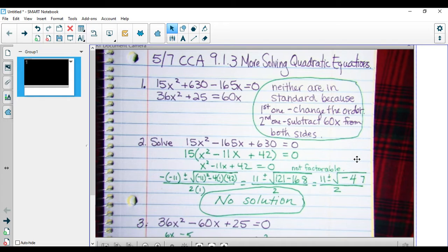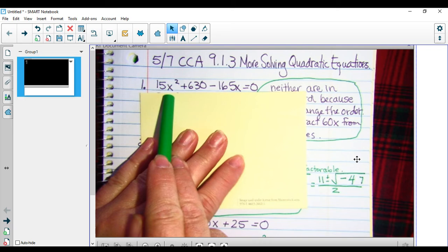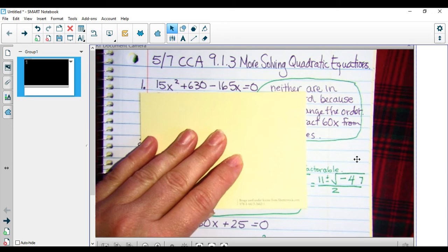Number one, you were given two equations. You had to say why they were or were not in standard form. The first one is not in standard form because we want to have the x squared term followed by the x and then the constant, so we need to change the order for that one.